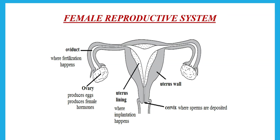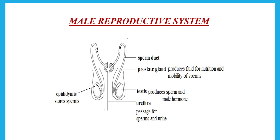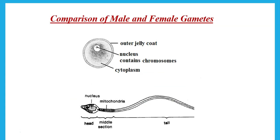The male reproductive system is made up of two testes. The function of the testes is to produce sperm and the male hormone. The sperm goes into the epididymis, where sperms are stored, and when they're ready to be released they go out through the sperm duct and then through the urethra. Note that in the male reproductive system, the urethra is the passage for both sperms and urine.